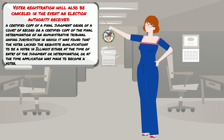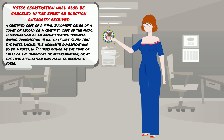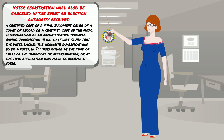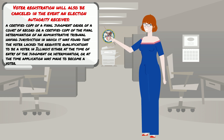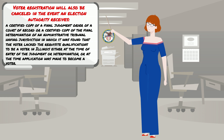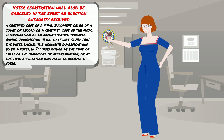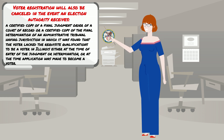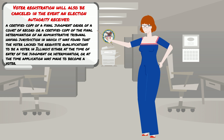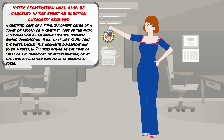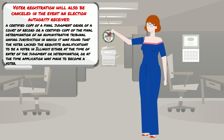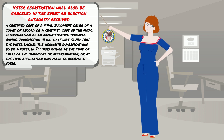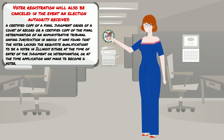Or a certified copy of a final judgment order of a court of record, or a certified copy of the final determination of an administrative tribunal having jurisdiction, in which it was found that the voter lacked the requisite qualifications to be a voter in Illinois, either at the time of entry of the judgment or determination, or at the time the application was made to become a voter.